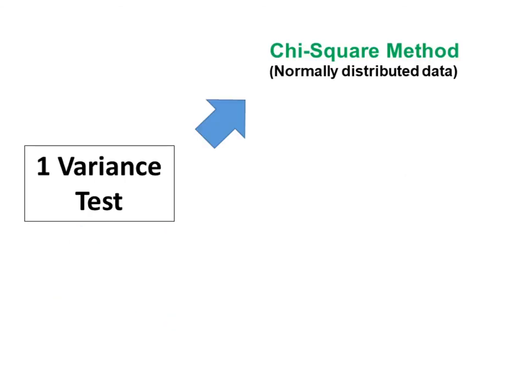For one variance test, use the chi-square method when your data are normally distributed. The method is inaccurate for non-normal data, even when the sample size is very large.